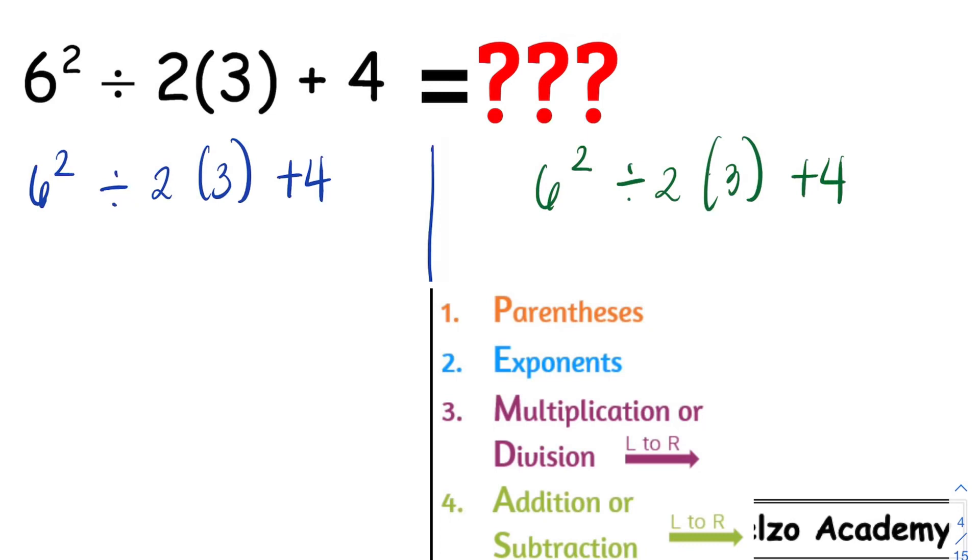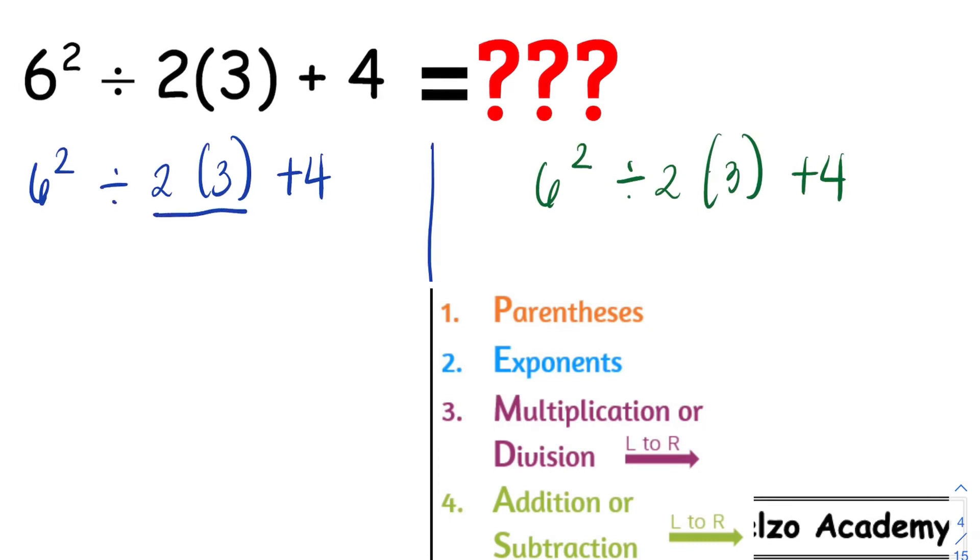From that mnemonic, we will simplify first the parentheses 2 times 3, and that is 6. So now we have 6 squared divided by 6 plus 4. After parentheses, we need to simplify the exponent. And 6 squared is equal to 36. So 36 divided by 6 plus 4.